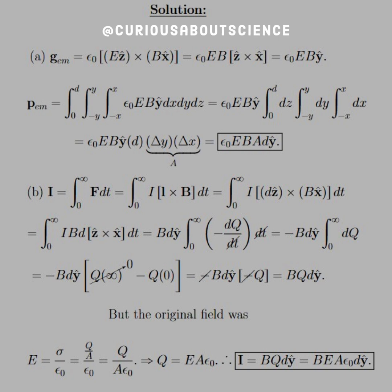we saw what F was with regards to the force of the current, because we have a wire in there now. That was I(L × B). Here L was dẑ, and cross B which is Bx̂.